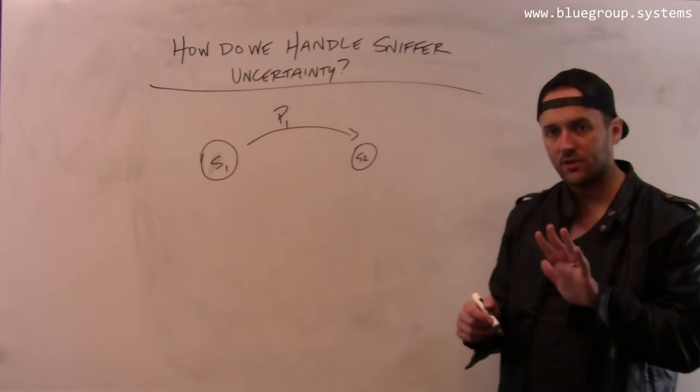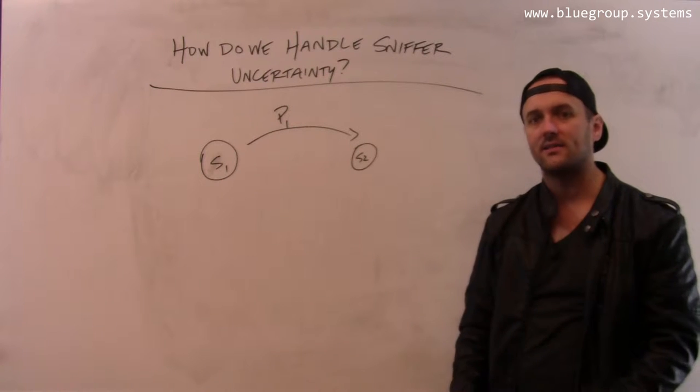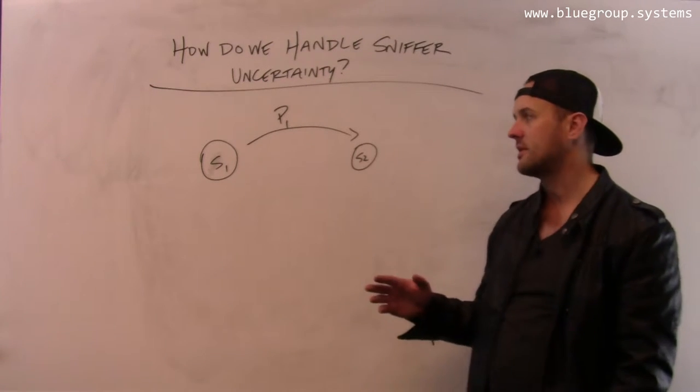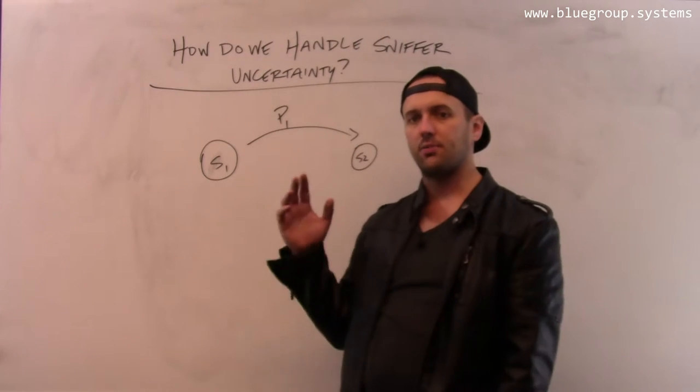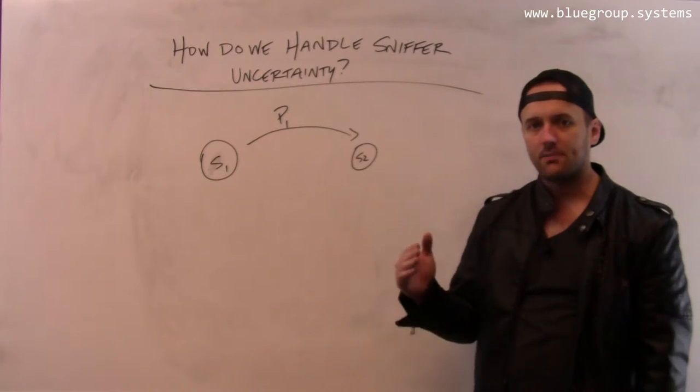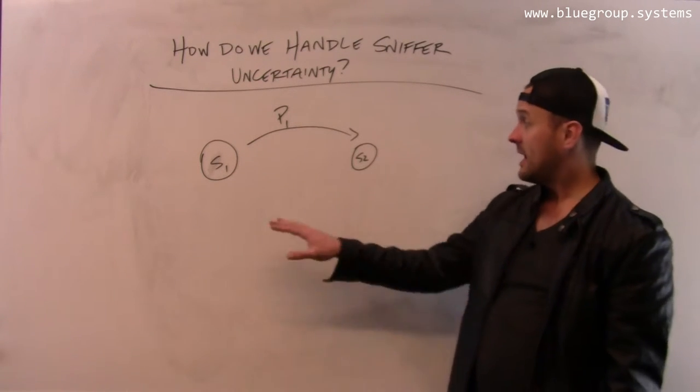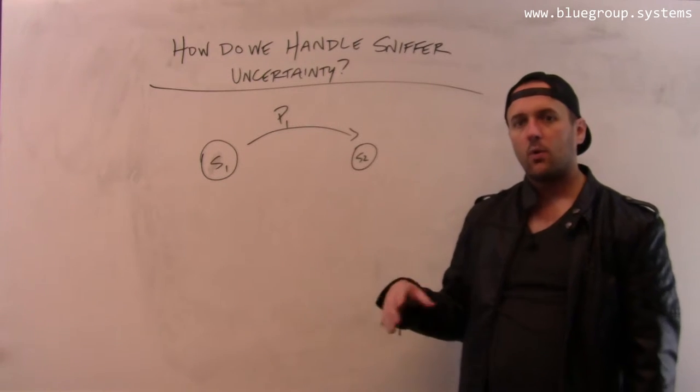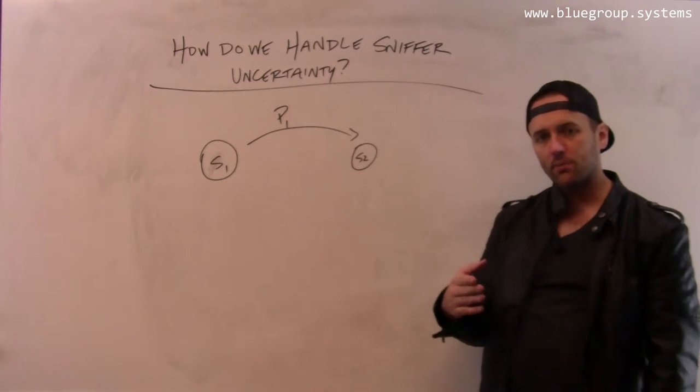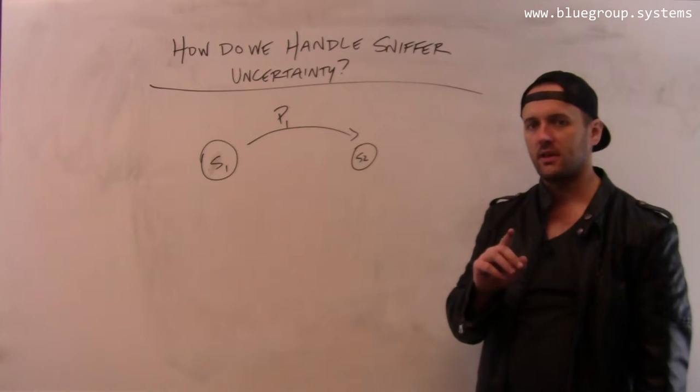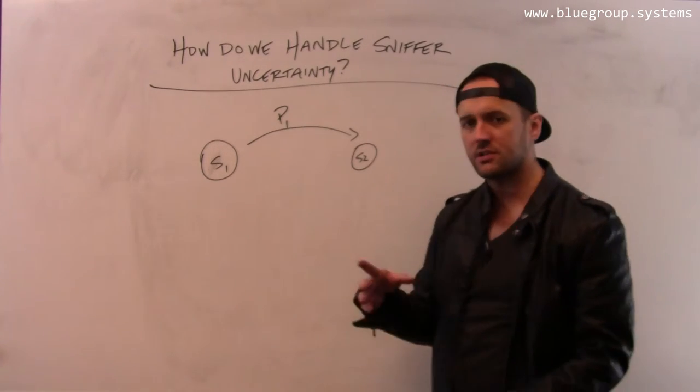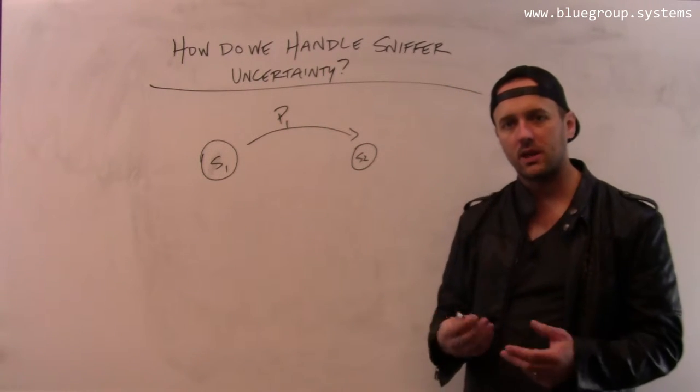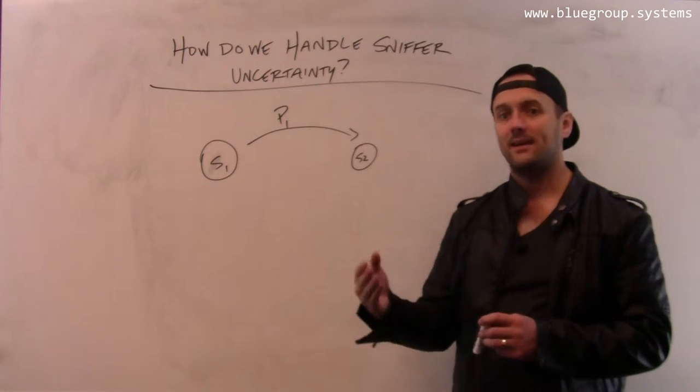Now the goal then becomes, given the sniffer trace, the trace of packets that have actually been observed by the sniffer, can I determine whether or not the protocol state machine accepts or rejects that trace? Now if I use the state machine as provided, I have this problem where the state machine does not incorporate the uncertainty in the sniffer's measurements. And so what we do is we take the original state machine and we compute something called the augmented state machine.